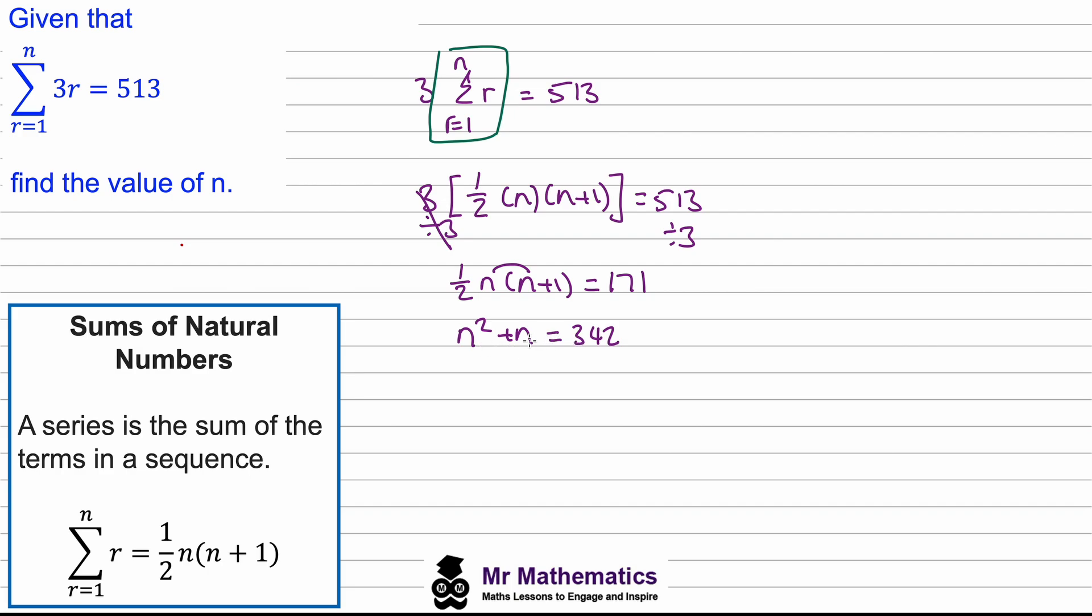We'll move this to the left hand side, so n squared plus n minus 342 will equal zero. And we can factorize this so we have n minus 18 multiplied by n plus 19.